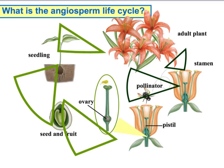Self-pollination occurs when a perfect flower with both male and female parts pollinates itself — a bee can take the flower's own pollen and move it to its own pistil. Cross-pollination occurs when the pollen from one plant pollinates a different plant. If the bee is on one flower and pollinates that same flower, that's self-pollination. Moving pollen from one flower to a different flower is cross-pollination.